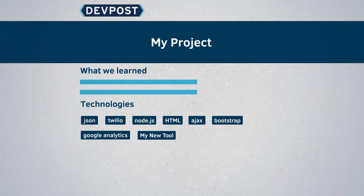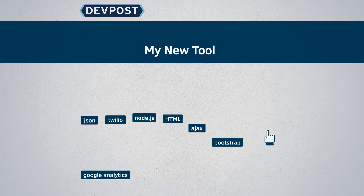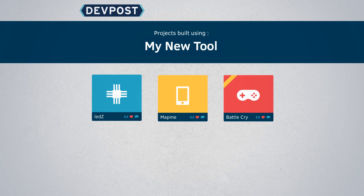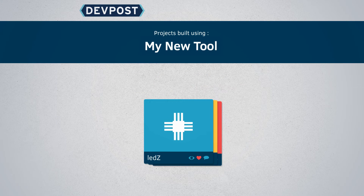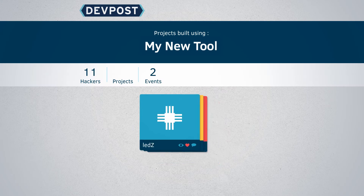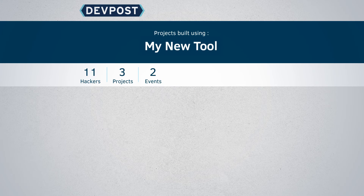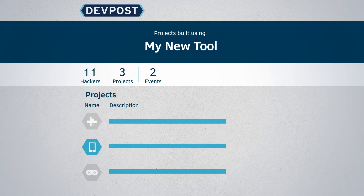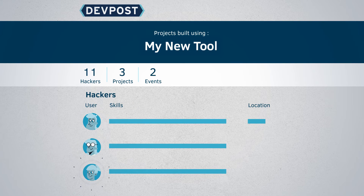Each technology and API that's tagged feeds into a gallery where developers can learn from each other's projects that share the same building blocks. This helps you track your developer outreach efforts through a metrics dashboard that shows what's being built using your tool, the hackers using it, and where they are in the world.